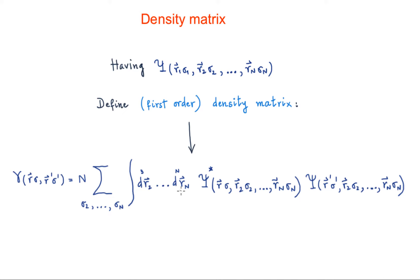We have the integration over the spatial coordinates from r2 to rn, and therefore the variables that are not integrated or summed are sigma, and then r prime and sigma prime here.